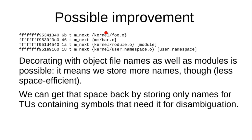I think object file names are only going to be used by tracer users when they find that something is ambiguous anyway. Normally they'll prefer to use modules or just nothing at all and hope there's only one. My hope is that tools will eventually say 'this is ambiguous — you need to pick one of these.'